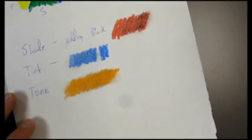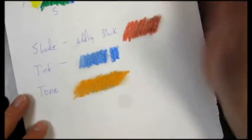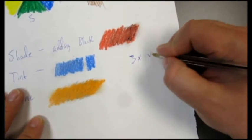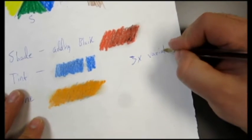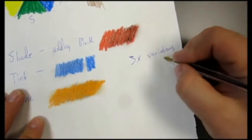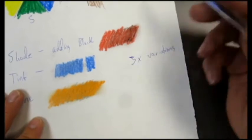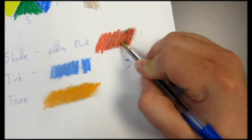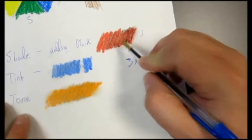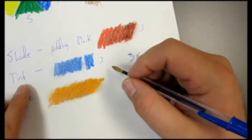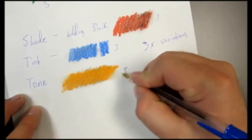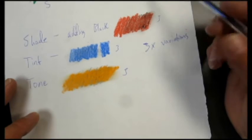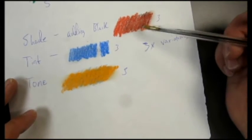Now, once you've completed an example for each, I want to see at least three variations of each. Three examples of your shades, three examples of tint, and three examples of tone. I recommend using different colors just to mix it up and make it a little easier for you, but give me three of each. So in total you should have nine different blocks.